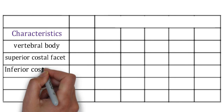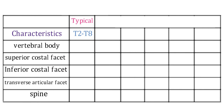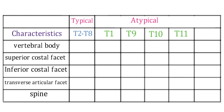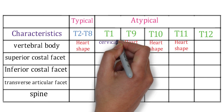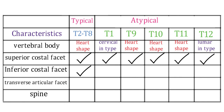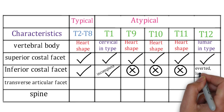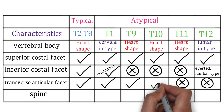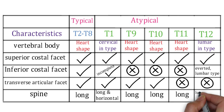Now let's see the differentiating characteristics of thoracic vertebrae — the vertebral body, superior costal facet, inferior costal facet, transverse articular facet, and the spine. The vertebral body is heart-shaped in all typical vertebrae (T2–T8) and in atypical T9, T10, T11; T1 is cervical in type and T12 is lumbar in type. The superior costal facet is complete and present in all. The inferior costal facet is complete in typical vertebrae, incomplete in T1, absent in T9–T11, and of averted lumbar type in T12. The transverse articular facet is absent in T11 and T12 but present in all remaining vertebrae. The spine is long in all typical and most atypical vertebrae, but long and horizontal in T1, and lumbar in type for T12.